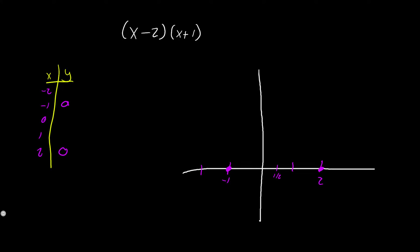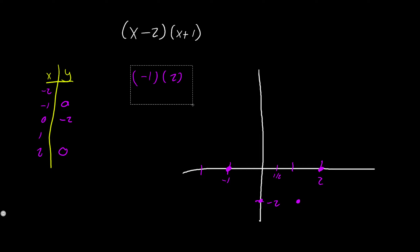Let's go ahead and plot x = 0: we get (-2)(1), which gives a y value of negative 2 when x = 0. If we look at x = 1, we get (1 - 2)(1 + 1) = (-1)(2), which gives us the same value, negative 2 again.